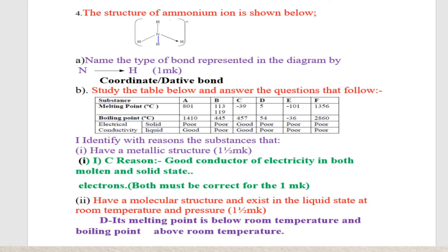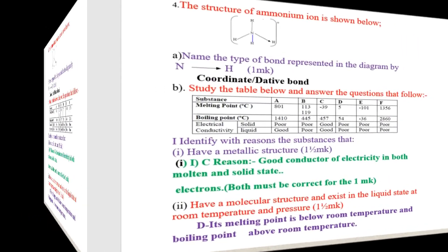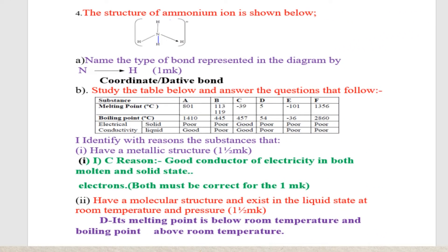Question number one: Identify with the reason the substance that has a metallic structure. That substance is C. The reason is because it is a good conductor of electricity in both molten and solid state.